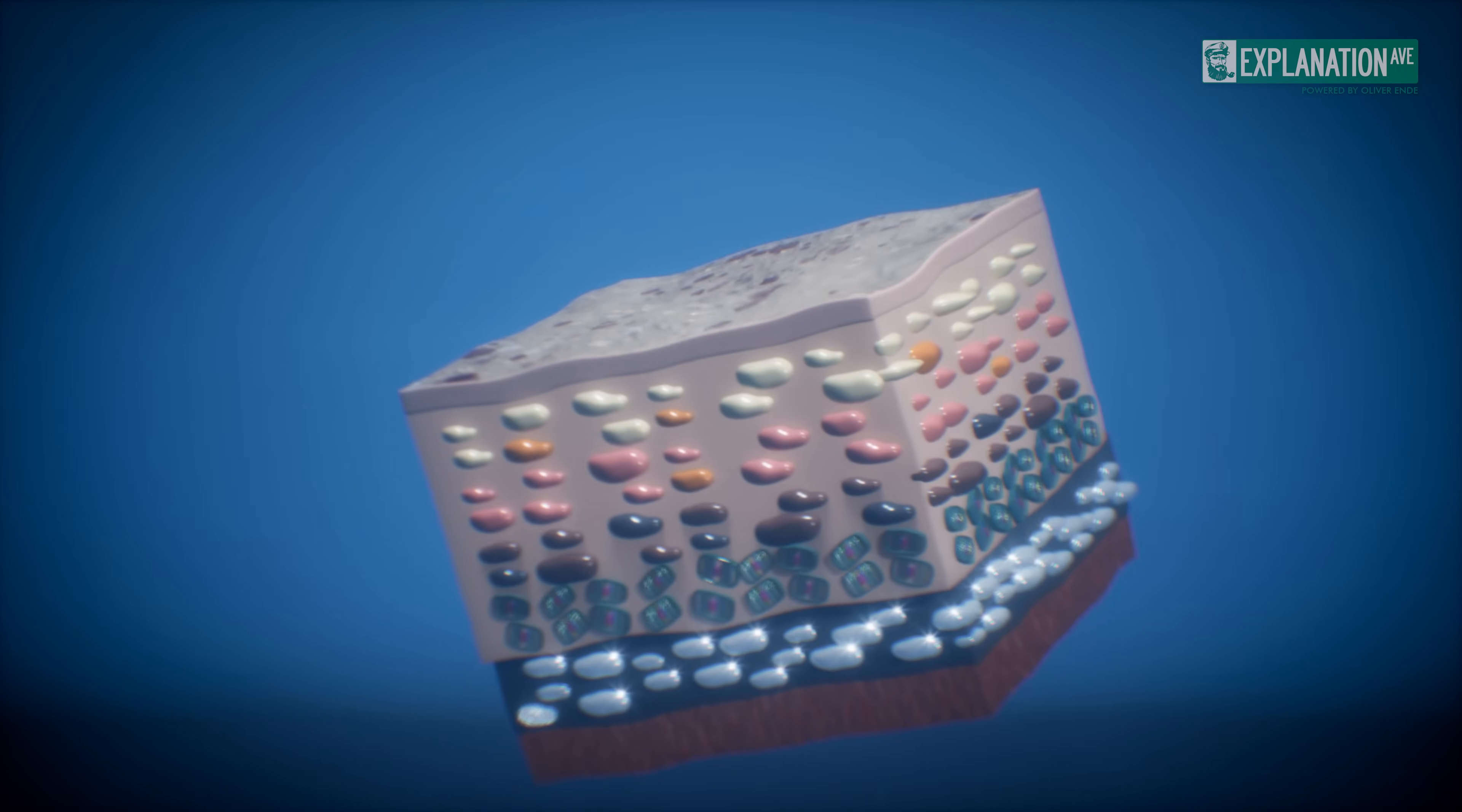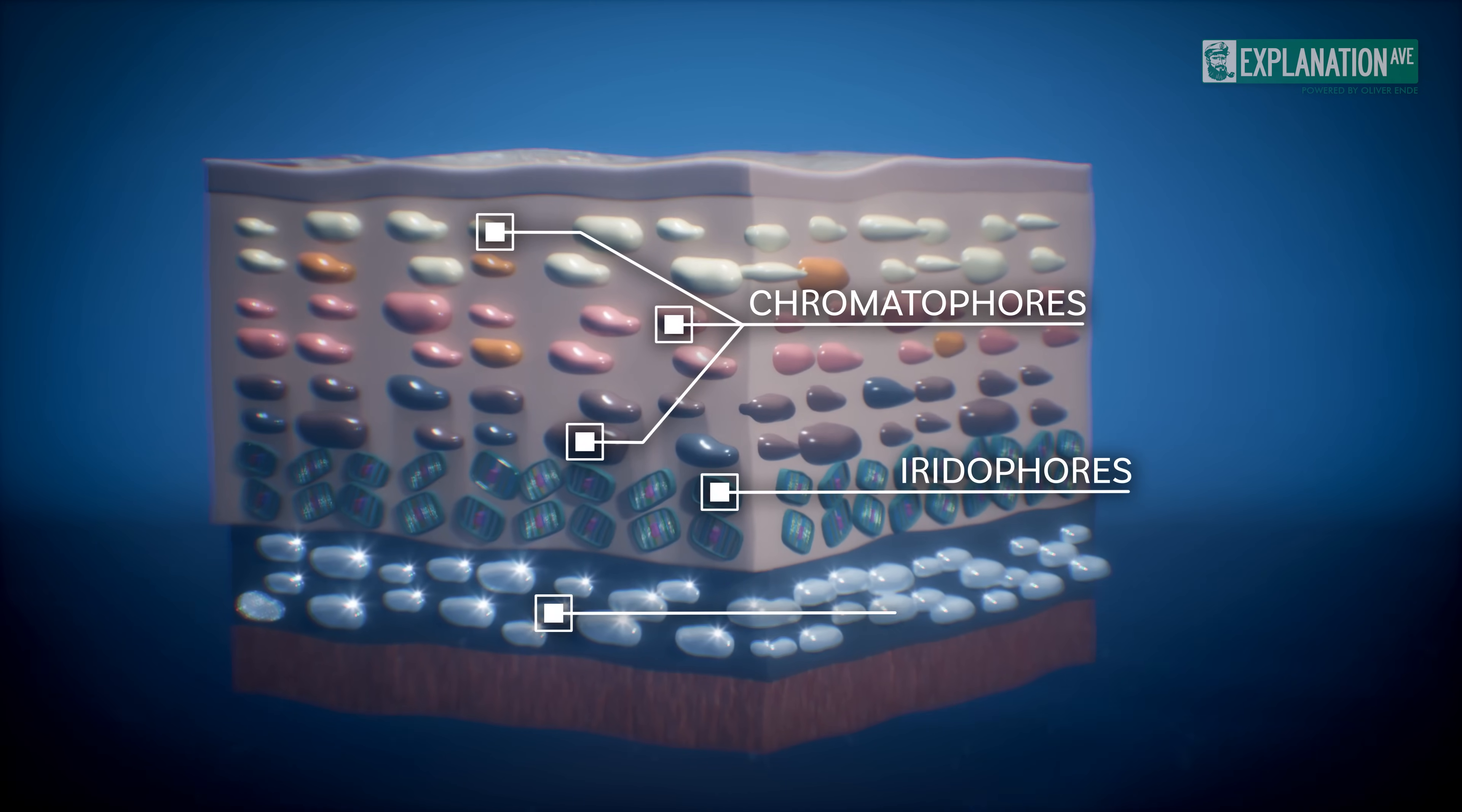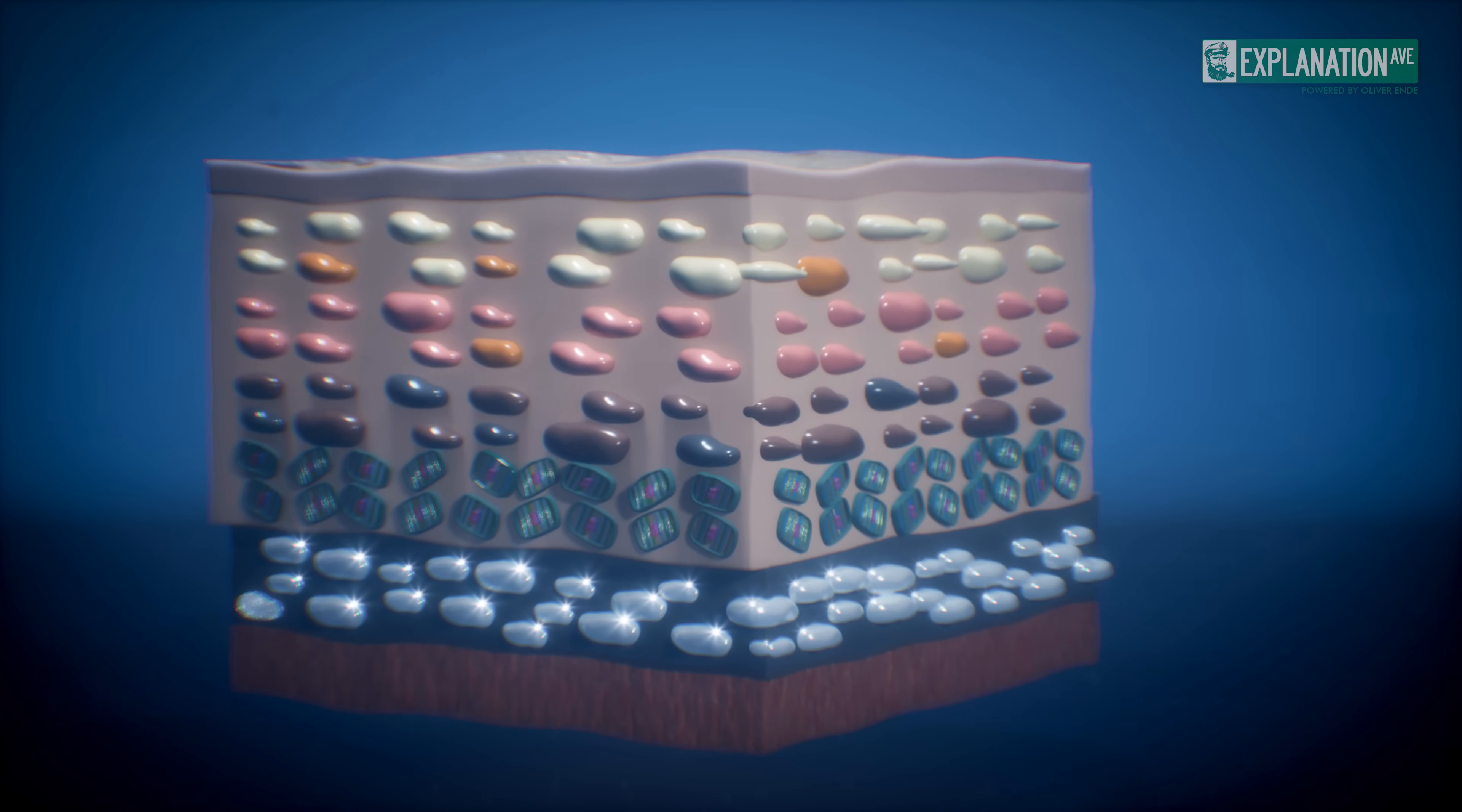The skin of the octopus consists of chromatophores, iridophores, leukophores, and papillae. These organs and cells are controlled by the brain and allow octopuses to change color and adapt to their environment in a fraction of a second.